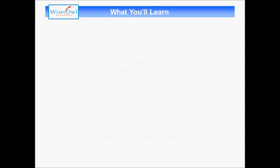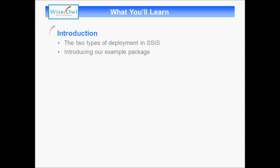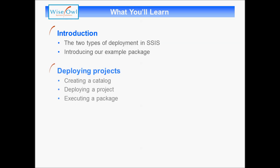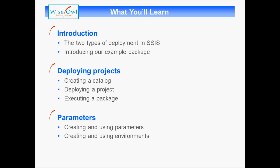Here's what you'll learn in the tutorial. We'll begin with an introduction explaining the two types of deployment in SSIS — package and project — and introducing our example package. We'll then go on to look at deploying projects: how to create a catalog in SSMS, how to deploy a project, and how to execute a package that you've deployed. Finally, we'll look at parameters — how to create and use them, and how to group them together into things called environments.